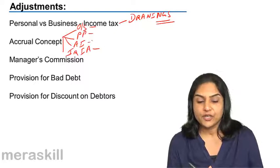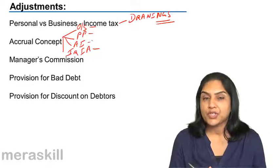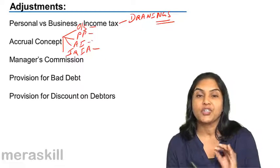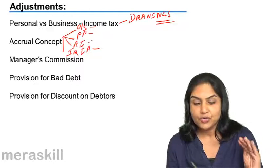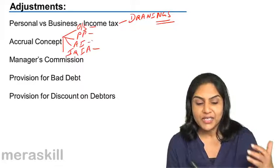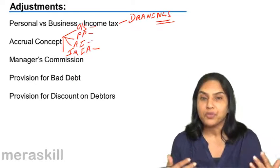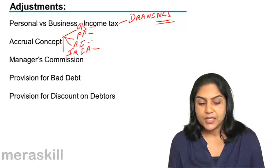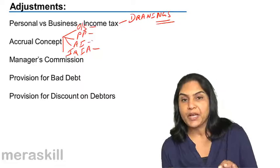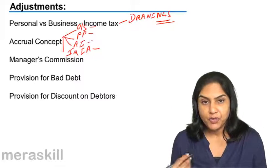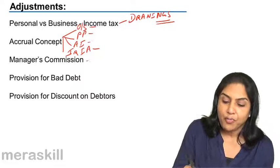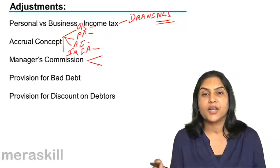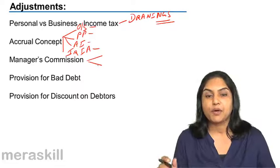Next, we had understood manager's commission. Commission may be based on a percentage of profit. This is to incentivize — give some kind of incentive to a manager for improving the profits. This commission could be computed on profits before charging such commission or profits after charging such commission, and accordingly we would make the computations.